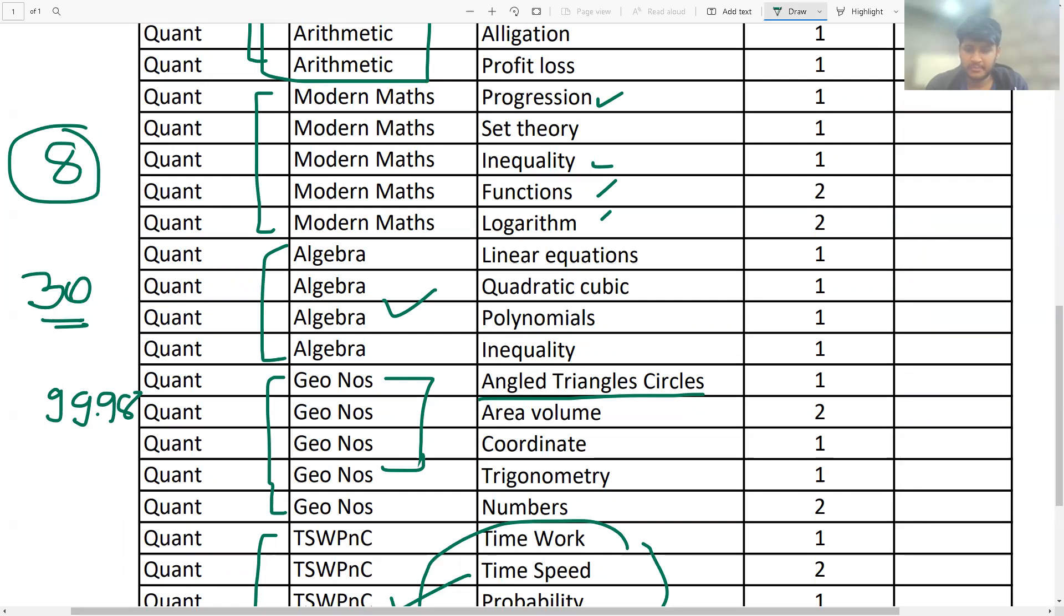Now, this is one question. Does 100 percentile help you convert the call? Because a lot of people say that any CAT percentile. Because I believe that once you get a call, everybody has equal chance. So I also believe that once you get the call, it all depends on the interview. So if you don't do well in the interview, the CAT score has limited weightage.